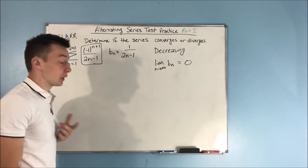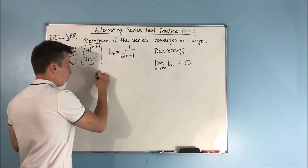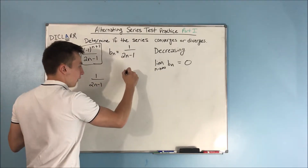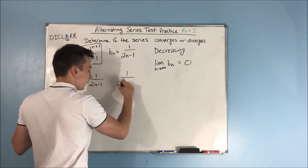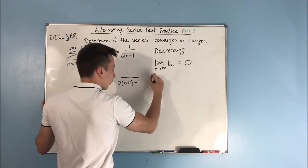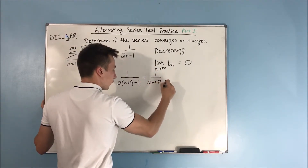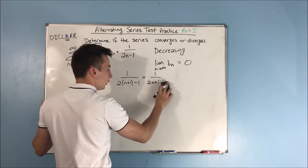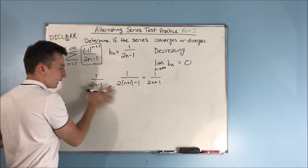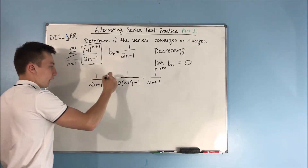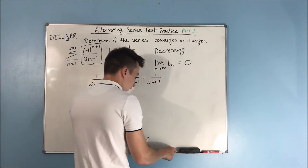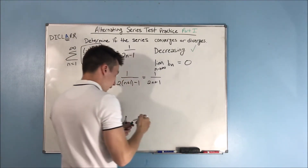We need to figure out if B sub n is decreasing as n increases. We have one over two n minus one, and if we increase n by one, we get one over two times (n plus one) minus one, which equals one over two n plus one. Since two n minus one is less than two n plus one, the first fraction is larger than the second — so it is decreasing. It passes our first condition.